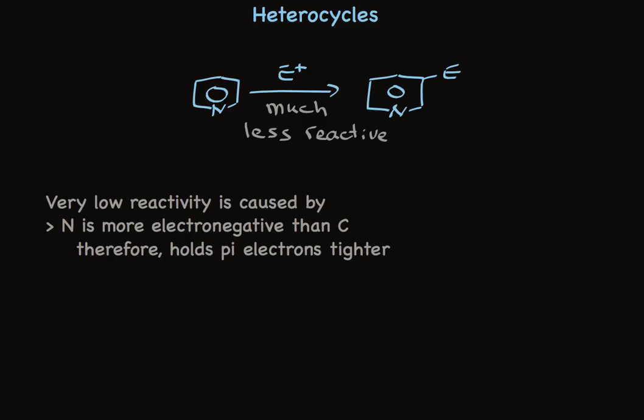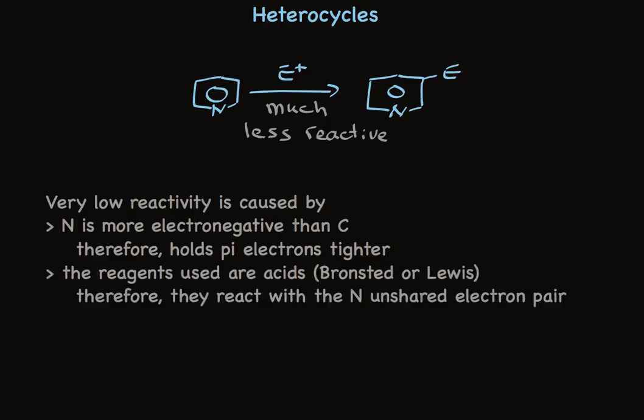First, the nitrogen that's in the ring is more electronegative than carbon, so it holds the pi electrons tighter. Because the first step in the mechanism is the reaction of the pi electrons with an electrophile, those pi electrons are less available for reaction, and the reaction is slower.